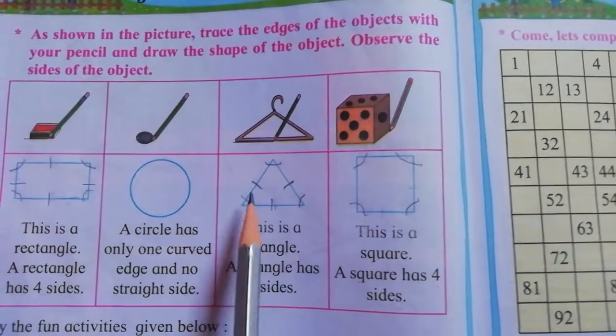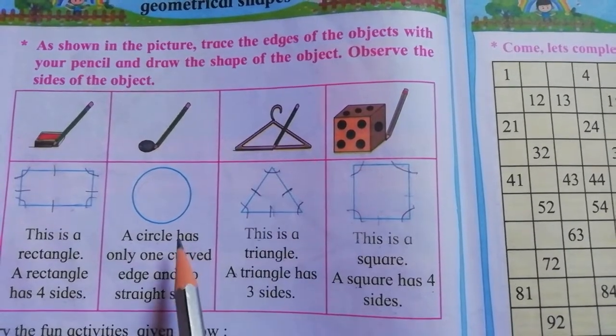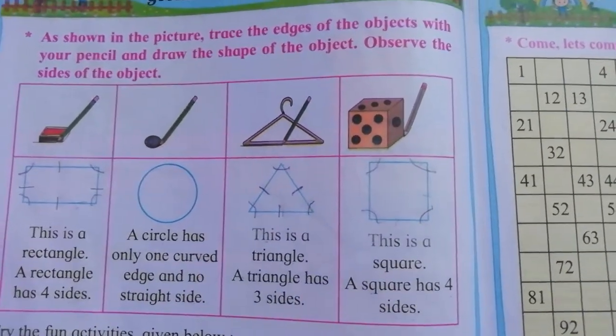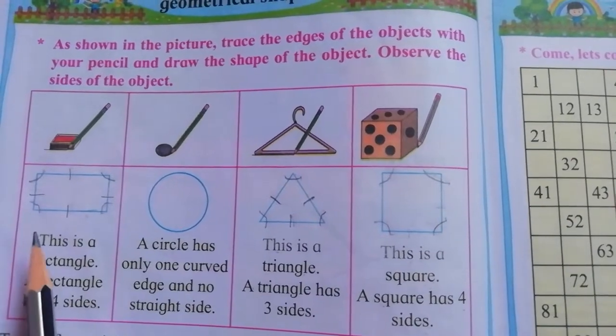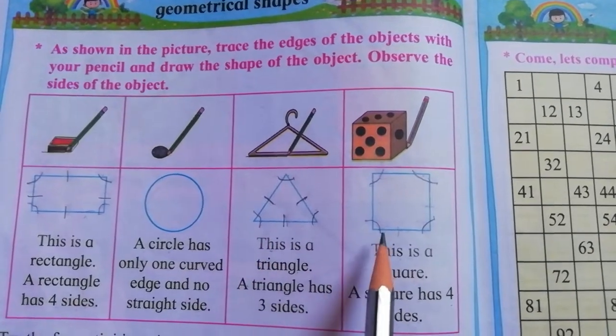So students, what is a corner? Where two lines join each other is called a corner. So these are your four geometrical shapes: rectangle, circle, triangle, square.